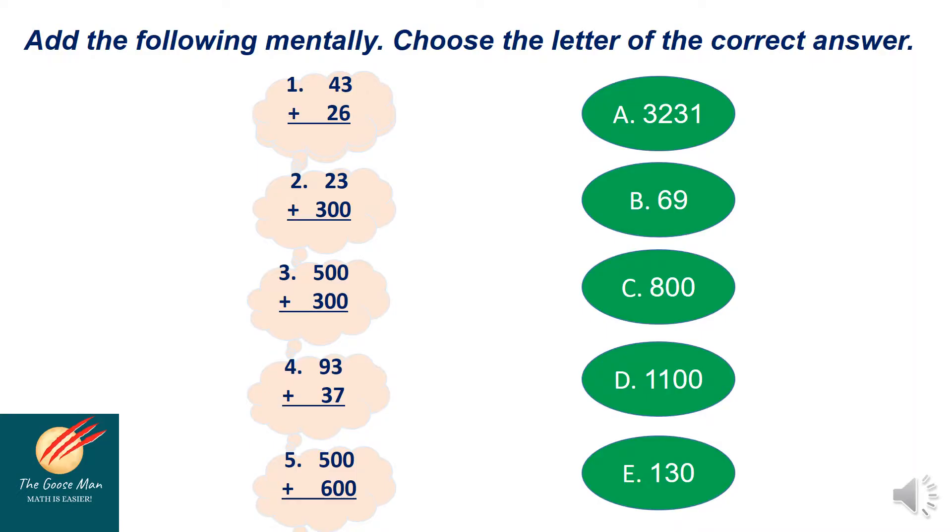For our warm up, let's add the following mentally. Choose the letter of the correct answer. Let's have number one. I'll add here 43 plus 26. I'll simply add 3 plus 6 is equal to 9, then we have 4 plus 2 is equal to 6. So the answer here is letter B.